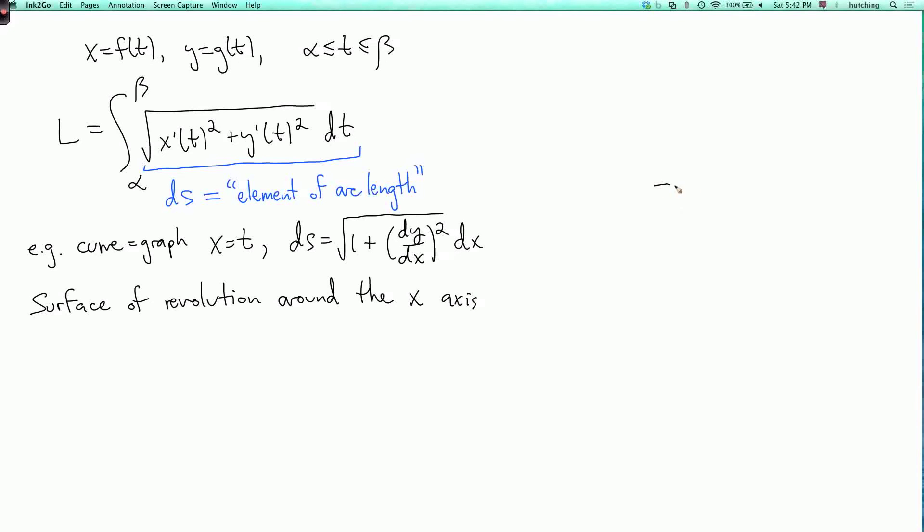So that means we take our curve in the x-y plane. Doesn't have to be a graph, but I'm drawing a graph because that's easier. Then we add a third dimension, which we'll call z, and we rotate this curve around the x-axis to get a three-dimensional surface. I now want to ask, what is the area of this surface of revolution?